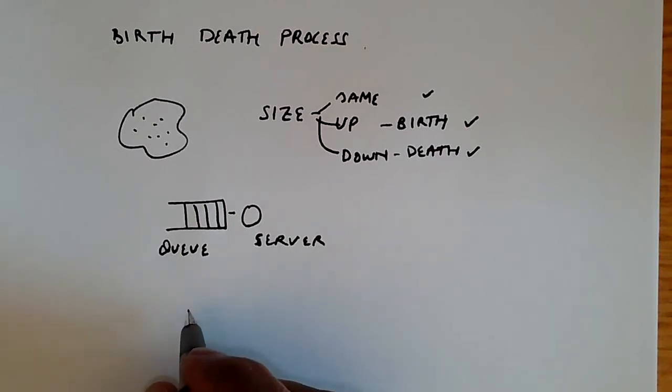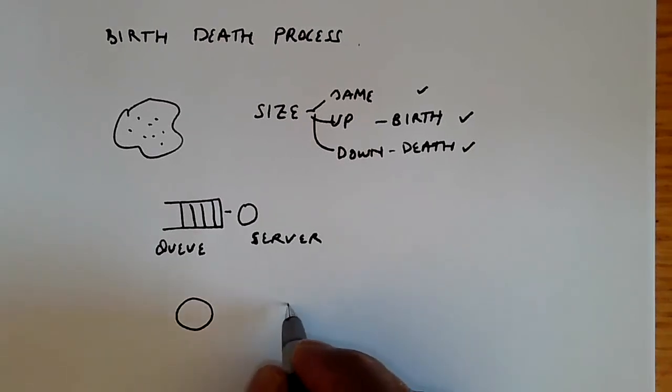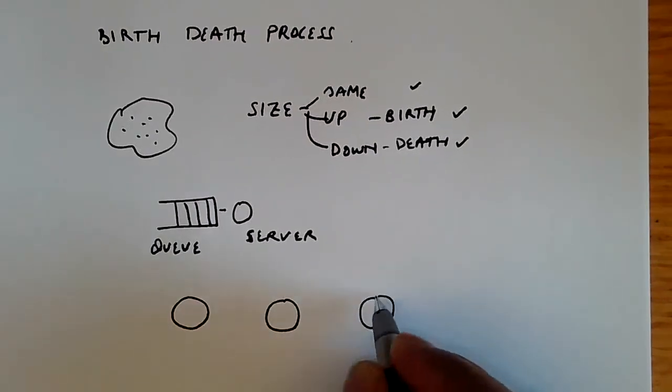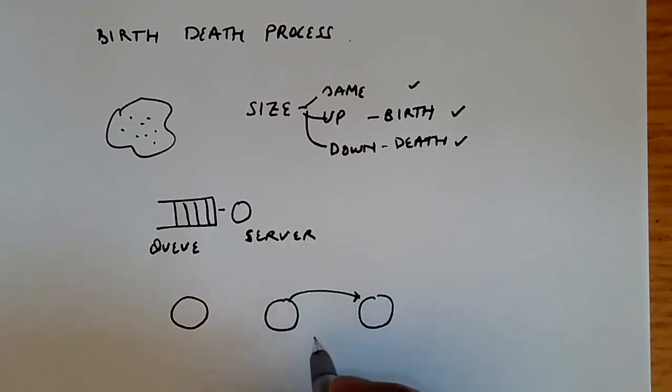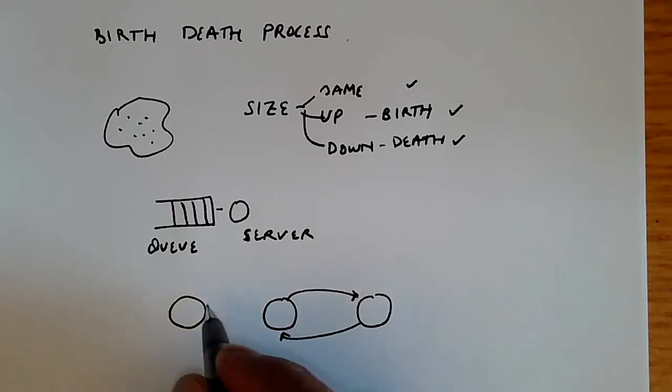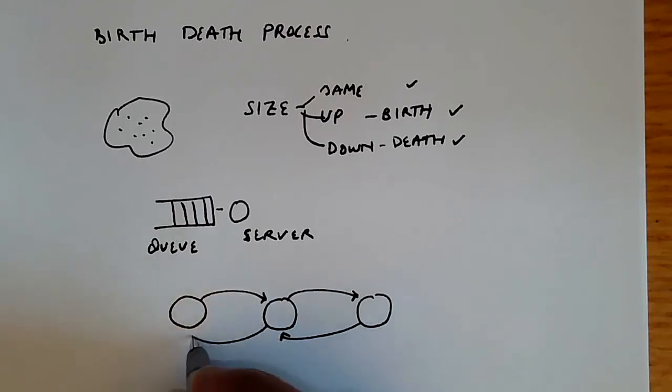We can draw this in the following way. We have a particular state that corresponds to the population size. And so on a birth, the population size increases by one. And on a death, it decreases by one. So we essentially have a structure like this.